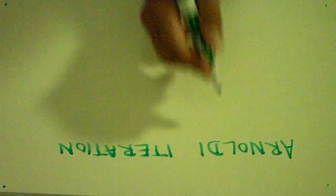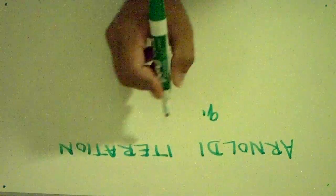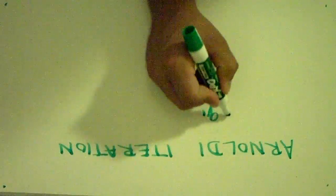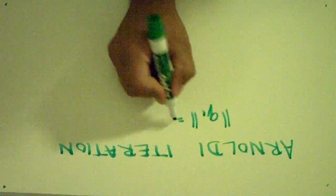So, the way to start this is to start with some arbitrary vector Q, Q1, which has a norm of 1, so that we can have orthonormal basis.